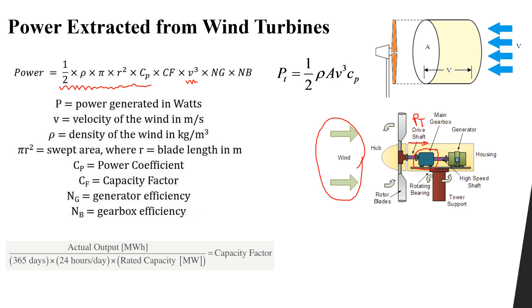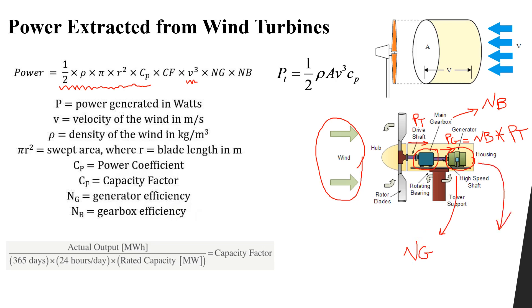Now we have a gearbox system with its own efficiency, called eta-b. The power input to the generator equals eta-b — the gearbox efficiency — multiplied by the turbine power. Our generator itself also has an efficiency eta-g, so the final output power from the generator equals eta-g times the power coming from the gearbox.